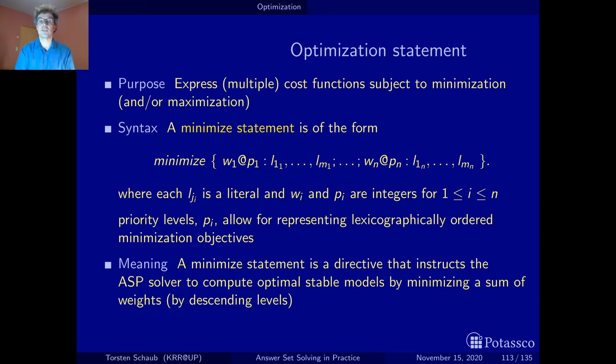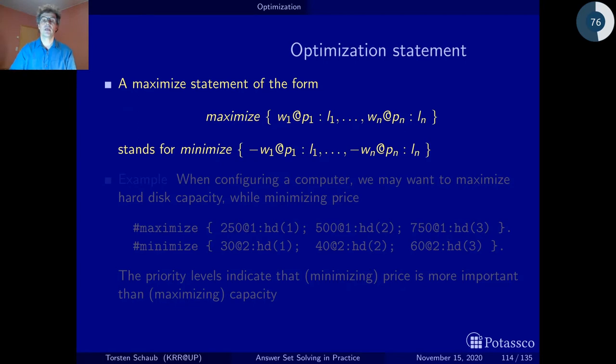As mentioned, minimize statements are the primitive optimization mechanisms. There are also maximize statements and whenever you write a maximize statement it's just translated into a minimize statement by making the weights negative, by putting a negation in front of it. And when you maximize actually weights, the output for instance of Clasp will be a negative number because Clasp only sees at the end the minimization and it doesn't even know that there was originally maximization.